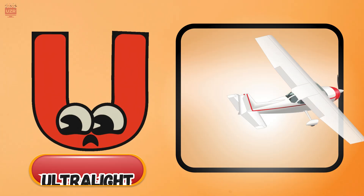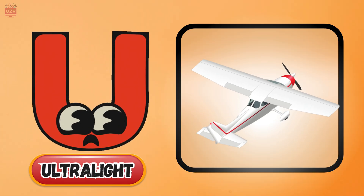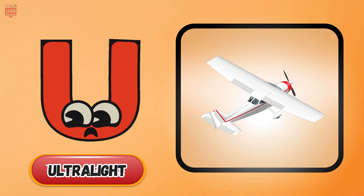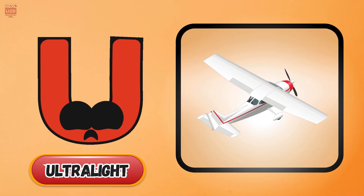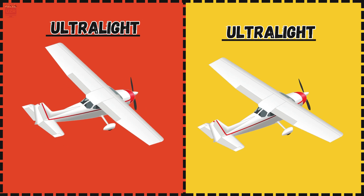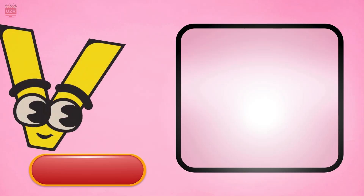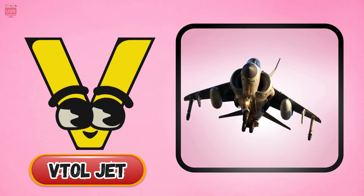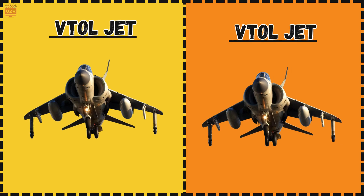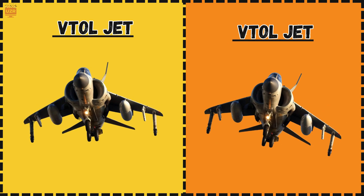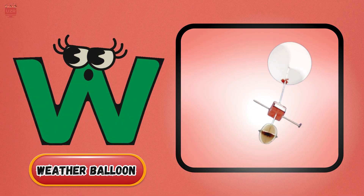U is for ultralight, tiny wings that gently glide. V is for VTO jet, taking off just like a ride.